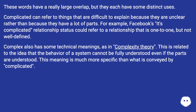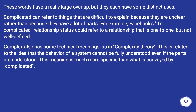These words have a really large overlap, but they each have some distinct uses. Complicated can refer to things that are difficult to explain because they are unclear rather than because they have a lot of parts. For example, Facebook's "it's complicated" relationship status could refer to a relationship that is one-to-one but not well defined.